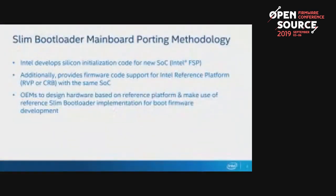I'll go straight to the methodology of the mainboard porting steps. In Intel, every time we come up with a new silicon or SOC, we develop the silicon initialization code — some call it the silicon reference code, SRC. It can be in the form of source code provided to independent BIOS vendors or ecosystem partners, or in the form of binary encapsulation known as the Intel FSP. Additionally, we provide firmware code to support the Intel reference platform, namely the RVP or CRB, with the same SOC. OEMs generally design hardware based on our reference platform, typically the CRB, and make use of the reference Slim Bootloader implementation for boot firmware development.